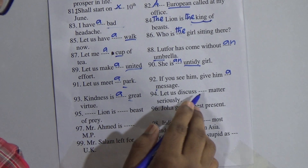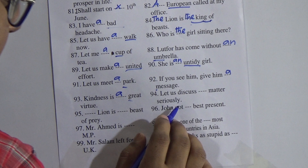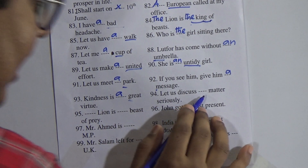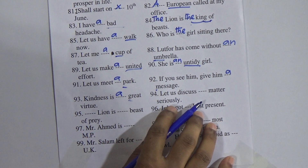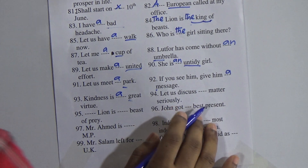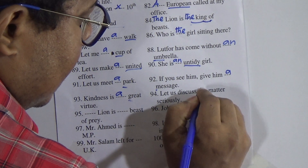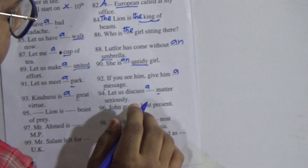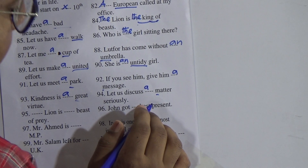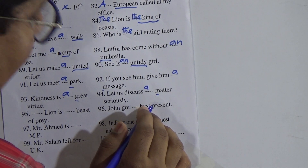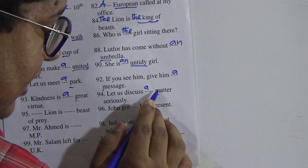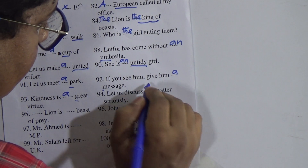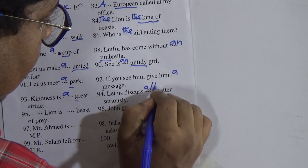94: 'Let us discuss ___ matter seriously.' You can put 'a': 'Let us discuss a matter seriously.' You can also put 'the': 'Let us discuss the matter seriously.' Both are correct — 'the matter' emphasizes it as definite, while 'a matter' is indefinite.